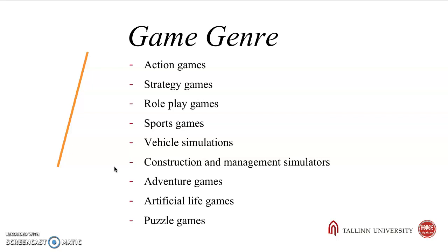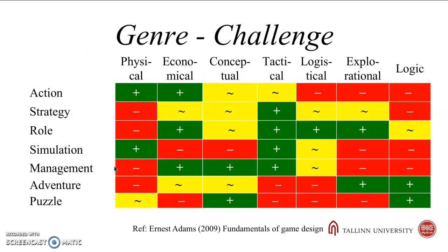Specifying the game genre helps your audience understand what kind of game you have in mind. It also helps you to choose between typical challenges. For example, action games are related mostly with physical challenges, like speed and accuracy, and economical challenges, like collecting ammunition and first aid packages. Usually action games are not related with logical reasoning. Adventure games, for example, are mostly related with explorational challenges, like obstacles and solving puzzles. Adventure games usually are not related with physical challenges.